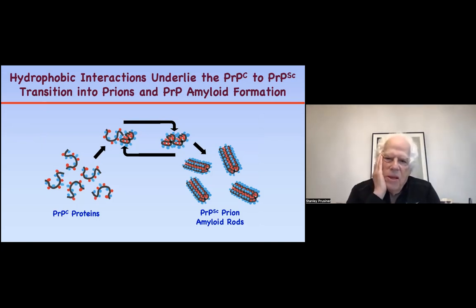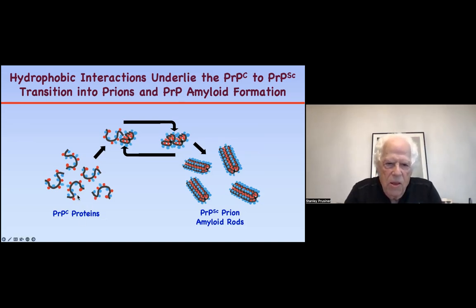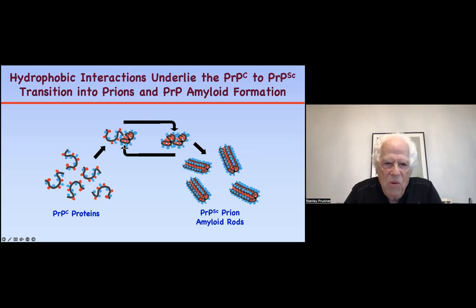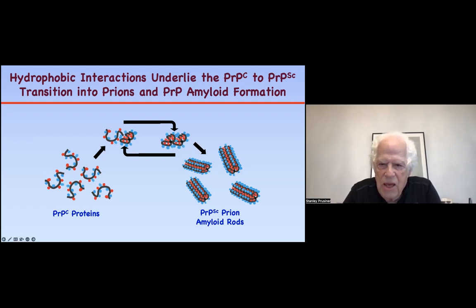Let me show you how to think about this in a cartoon. The amino acids with hydrophobic side chains are shown in red, and the blue ones are either neutral or water-soluble. When these proteins start to fold, if there are many red residues, the protein tries very hard to internalize them within its structure — about 40 percent of amino acids have hydrophobic side chains. Eventually they assemble into things like amyloids, where the red residues are internalized and the blue ones are on the outside.